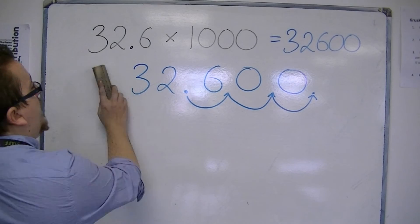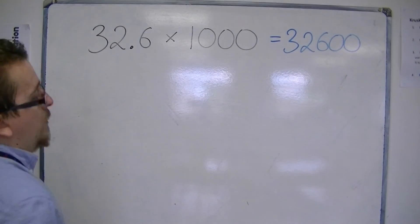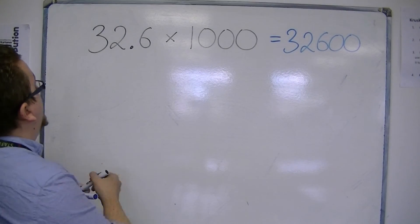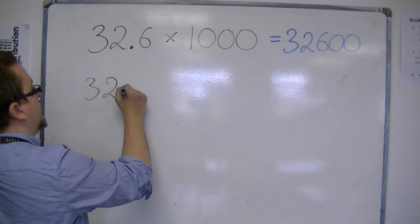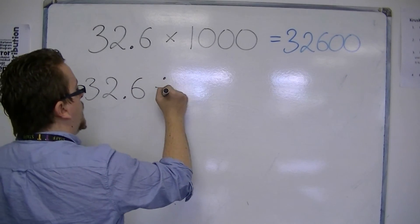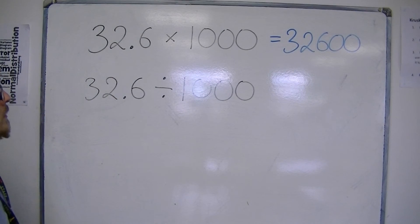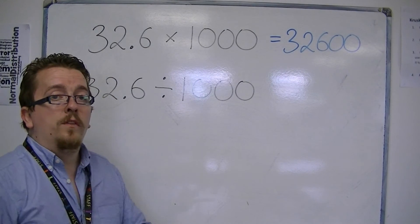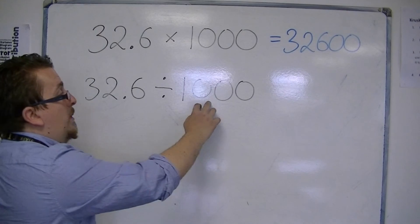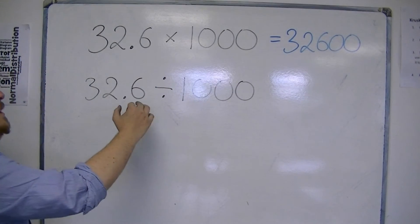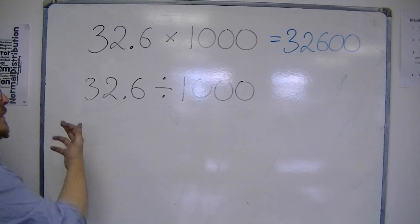What if, instead, we divide by 1,000? Now, we know that it's going to move three places, but because we're dividing, it must move three places to the left.